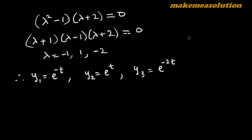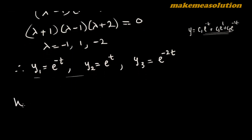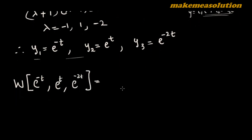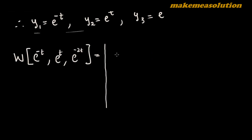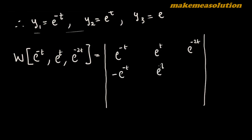The general solution is y = c₁e^(-t) + c₂e^(t) + c₃e^(-2t). We are now going to determine the Wronskian of e^(-t), e^(t), and e^(-2t). To do this, we set up the 3×3 Wronskian matrix with the first row: e^(-t), e^(t), e^(-2t).